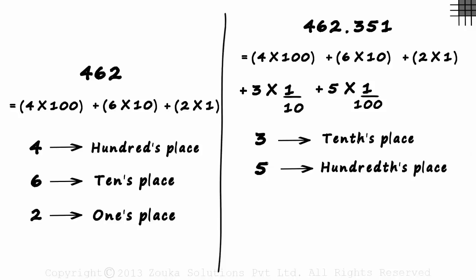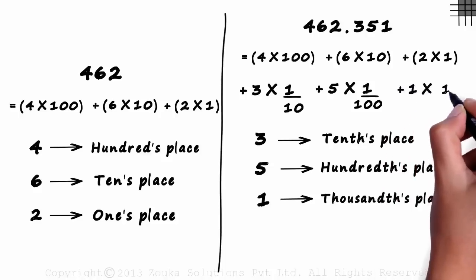The third digit to the right of the decimal point, which is 1, is in the thousandths place. So we add 1 times 1/1000.